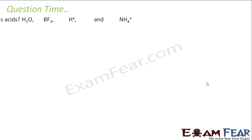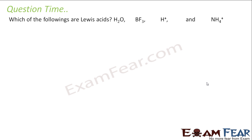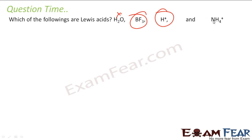Which of the following are Lewis acids? H2O is neutral; BF3 is a Lewis acid; H+ is a Lewis acid; NH4+ is also a Lewis acid because it donates H+ during ionization. Now we will take up ionization of acids and bases.